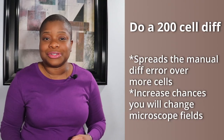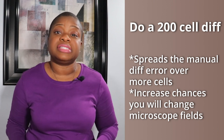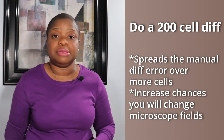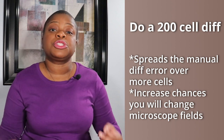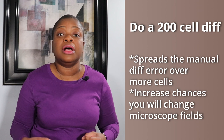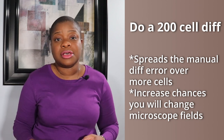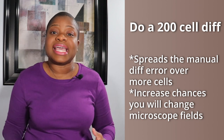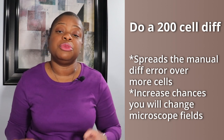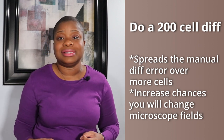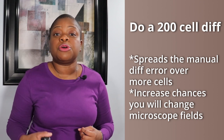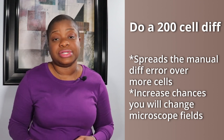I will do a 200-cell differential during the initial diagnosis of an acute leukemia. This is because it will spread the inherent error that comes from doing a manual differential among more cells. Also, in the case of really high counts, it will increase the chances that you will move to another microscope field — I have had patients where one microscope field had close to 100 cells.